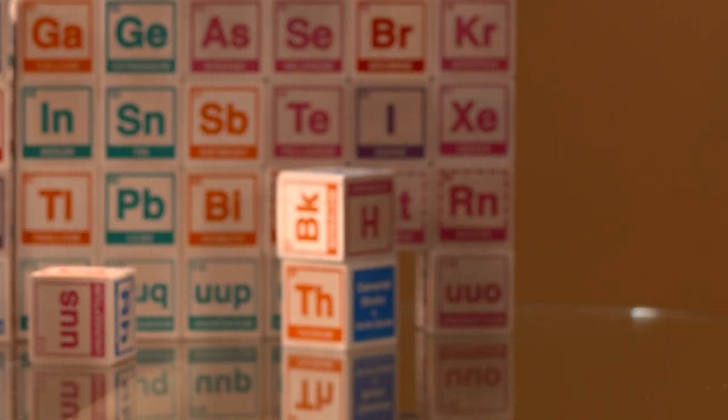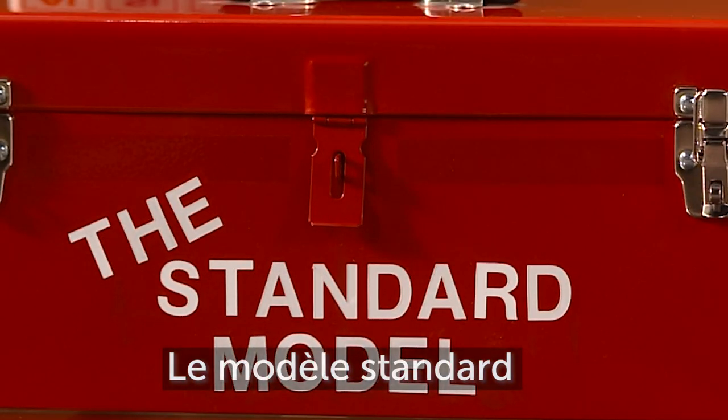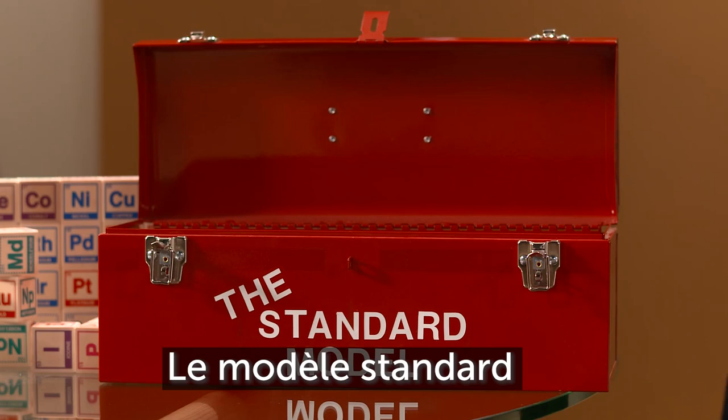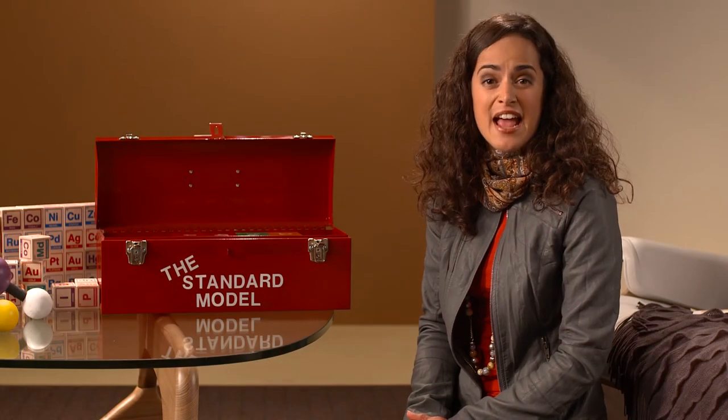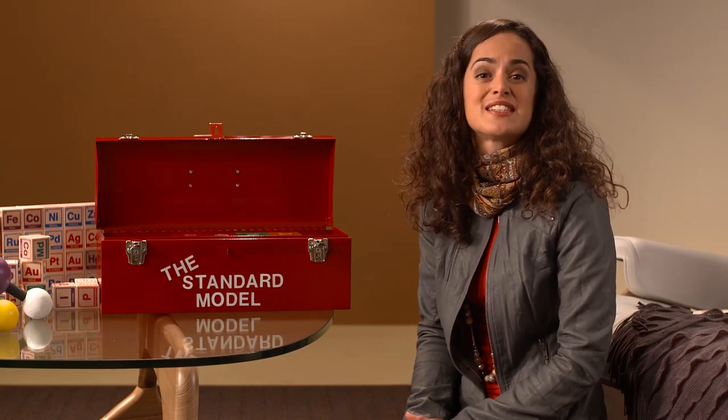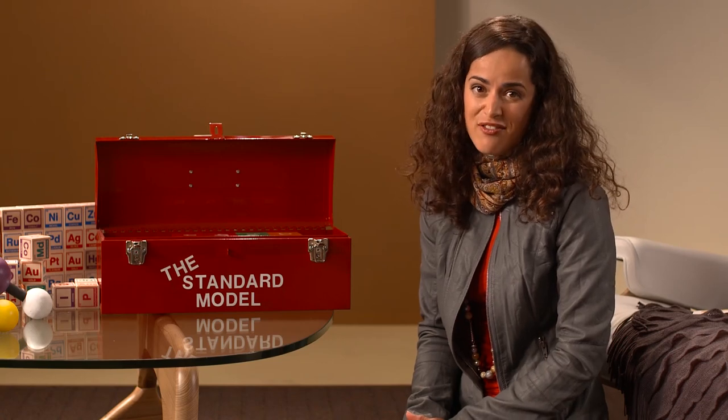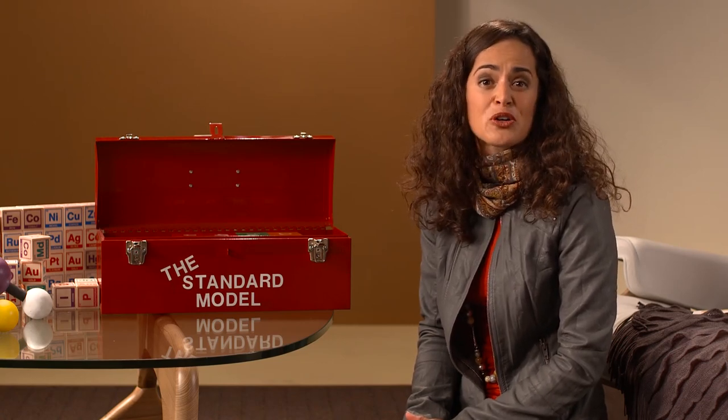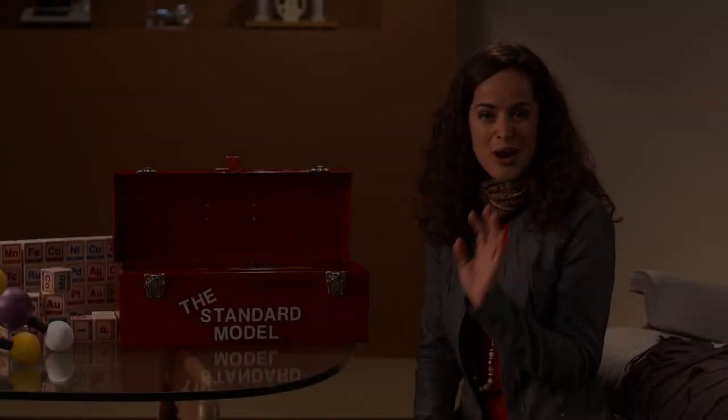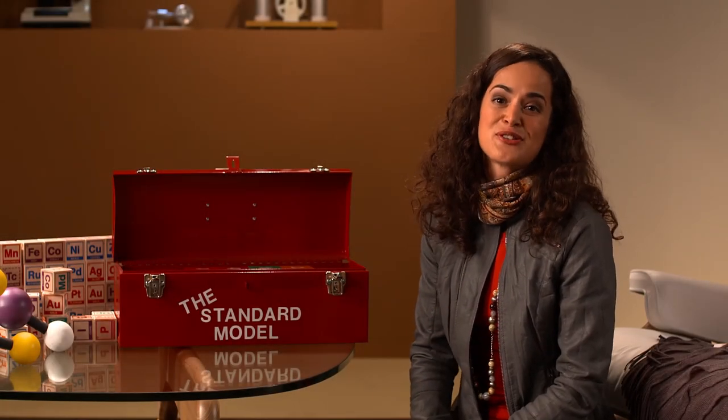Mais le modèle complet de la physique des particules comprend plus que l'atome. Il doit inclure toutes les particules existantes dans l'univers. Le modèle actuel de la physique des particules s'appelle modèle standard. Il décrit toutes les particules élémentaires que nous connaissons et les forces qui les retiennent ensemble. C'est un des modèles les mieux réussis jamais vus. Il peut faire des prédictions ultra précises à propos des particules. Si on prend les particules qu'on connaît et qu'on se demande quelle est la manière la plus générale selon laquelle elles peuvent interagir à faible énergie selon la mécanique quantique et la relativité générale, on obtient le modèle standard.